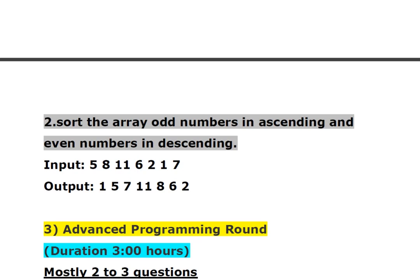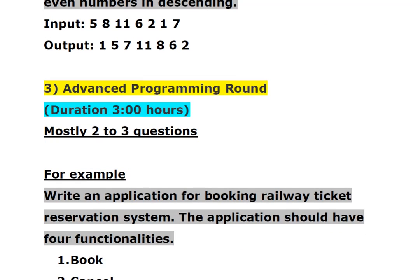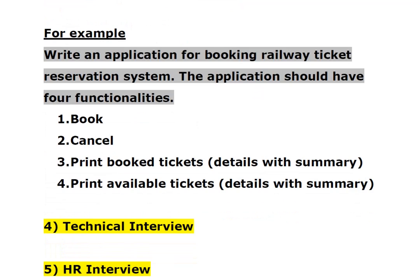After getting shortlisted, you will be called for the third round — the advanced programming round. The duration is 3 hours and mostly 2 to 3 questions will be asked. An example question is: write an application for a railway ticket reservation system. The application should have four functionalities or modules — book tickets, cancel tickets, print booked tickets, and print available tickets.